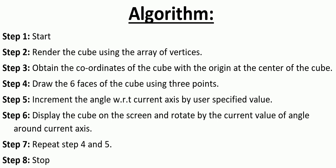The sixth step is displaying the cube on the screen and rotating it by the current value of the angle around the current matrix. This is done using a display function — first we show the simple cube, and every time you use a keyboard or mouse function to change the value, we display it again. The seventh step is repeating steps four and five, since you can change values any number of times via keyboard and mouse. Basically, the program gives you a perspective view of the cube and you can view the cube through a full 360 degrees. Then we stop the program.